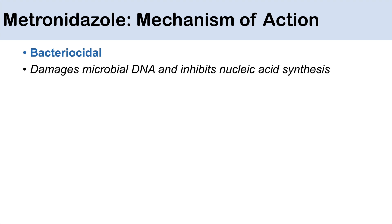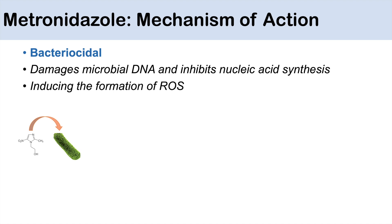So how does metronidazole work? What is its mechanism of action? Metronidazole is a bactericidal antibiotic. It is bactericidal through its ability to damage microbial DNA and inhibit nucleic acid synthesis, and it does these things through its ability to induce the formation of reactive oxygen species, or ROS. When metronidazole comes into contact with bacteria, it can easily diffuse through the bacterial cell membrane due to its small size, and it can diffuse into both aerobes and anaerobes.